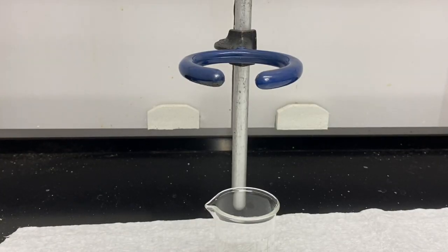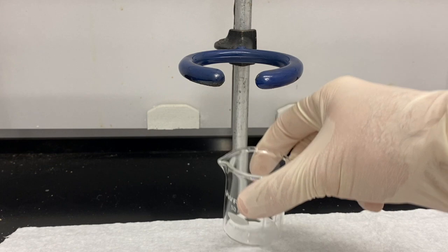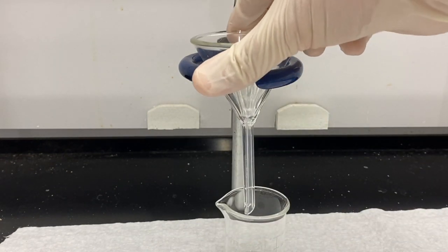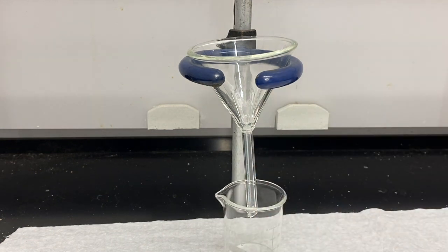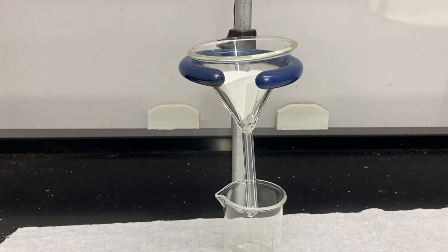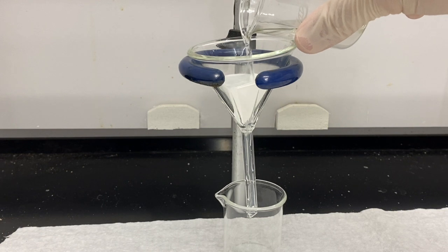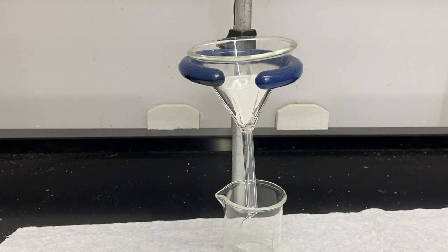Alright, so now I have to filter off that solid to get it away from the dichloromethane and my product. So I'm going to use gravity filtration. I've got my pre-weighed 50 mL beaker, a glass funnel, and I have a piece of filter paper that I folded into quarters so it's kind of a little cone shape and fits in there nicely. I'm just going to take my solution with my solid in it and I'm going to carefully pour it into the funnel and let it drain down, and do that until I remove all of the solid.